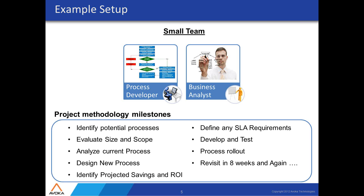Going back to how I got started in business process management and reengineering — I spent time at Motorola where I was a developer creating workflow applications. We created a small team of three people, and as we scaled out, we created additional teams of three to attack these applications. In one year, our first three-person team ended up saving over $8 million for Motorola. The savings were huge, and it really helped launch my career.